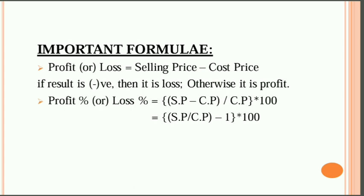There is one formula. For profit percentage: SP minus CP, divided by CP, into 100. We compare the selling price to the cost price. If you have a profit percentage, it is SP minus CP divided by CP into 100. A simpler way to write this is: SP divided by CP, the whole minus 1, into 100. You can use this formula to solve problems.